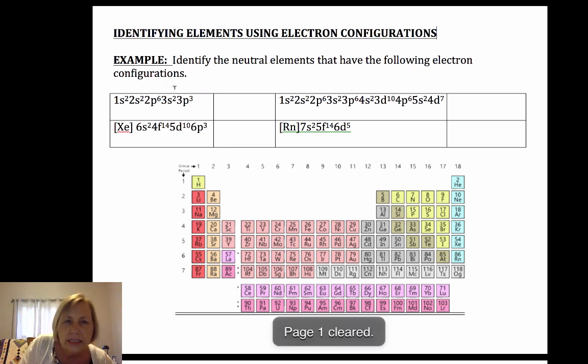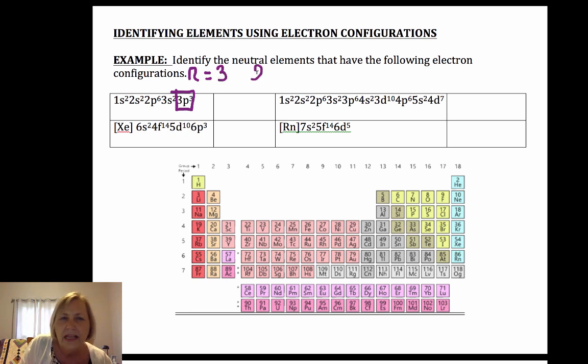Or you can simply look at this last configuration. That last configuration tells me n equals 3, l equals p, and I have three electrons in it. So if I have a p block, n is equal to the period number. So I know that I'm in the third period. This is the s block, this one's the p block. So third period p block go in 1, 2, 3 elements and you would get phosphorus.